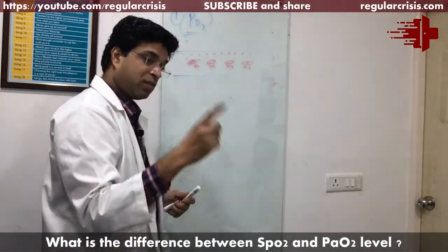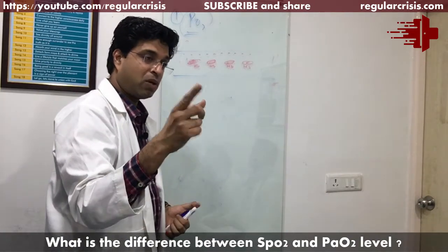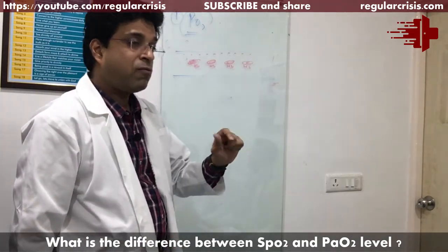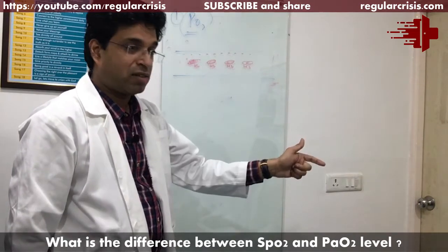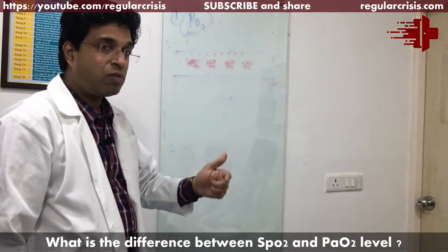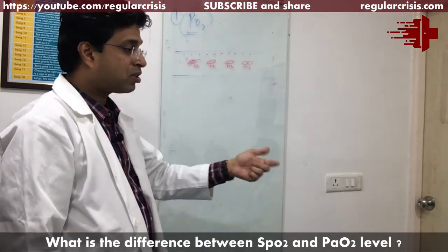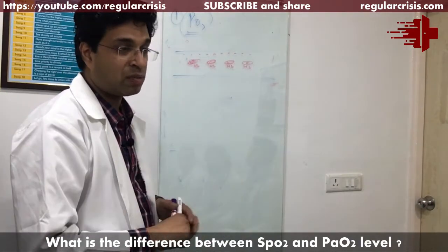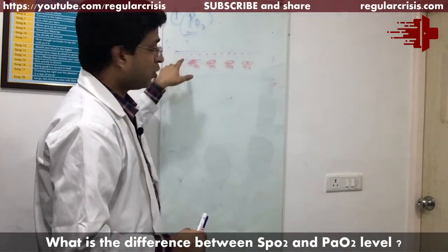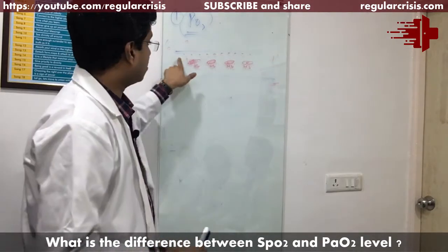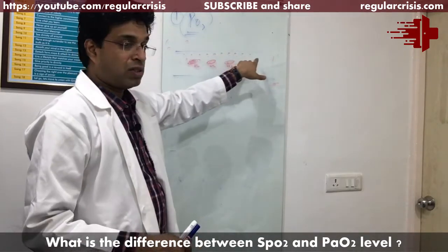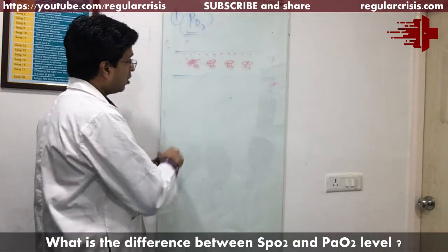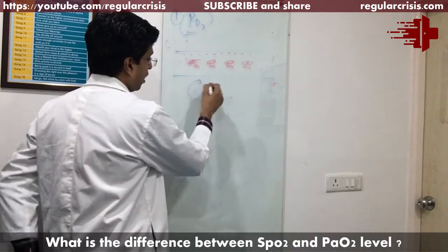The pulse oximeter which you are measuring on the monitor shows the saturation of hemoglobin with oxygen — how much hemoglobin is being saturated with oxygen. And the PO2 which you are measuring in the ABG is the dissolved oxygen present in the plasma.